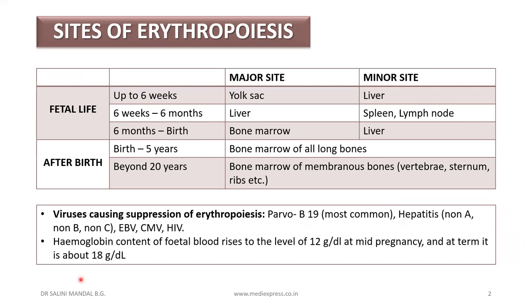But if the question is the most common virus causing suppression of erythropoiesis, the answer should be Parvovirus B19. Additionally, the hemoglobin content of fetal blood rises to the level of 12 gram percentage at mid-pregnancy, and at term it is about 18 gram per deciliter.